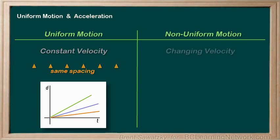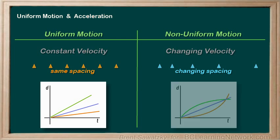Non-uniform motion, on the other hand, means that the velocity is changing — there is acceleration involved. The distance the object covers in any given time increases or decreases as the velocity changes. Accelerated motion on a d versus t graph is represented by a non-linear curve. The curve can get steeper if the object is accelerating positively, and the curve will get more gradual if the object is accelerating negatively.